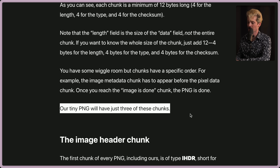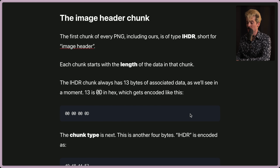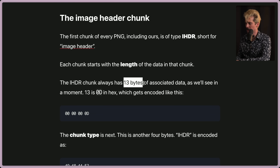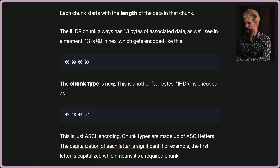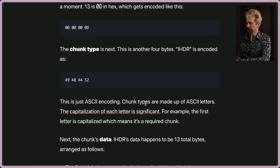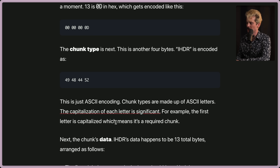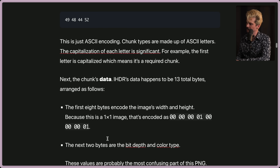Our tiny PNG will have just three of these chunks. The image header chunk — the first chunk of every PNG — is of type IHDR, short for image header. Each chunk starts with the length of the data in that chunk. The IHDR chunk always has 13 bytes of associated data. 13 is 0D in hex, which gets encoded as 00 00 00 0D. Chunk type is next — another four bytes. IHDR is encoded as 49, 48, 44, 52. This is just ASCII encoding. Chunk types are made up of ASCII letters. The capitalization of each letter is significant — for example, the first letter being capitalized means it's a required chunk.